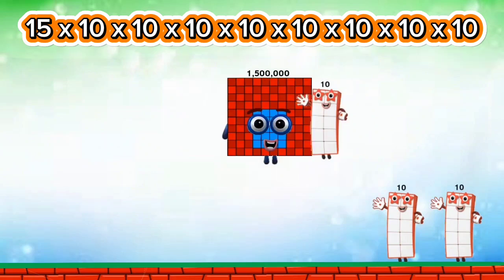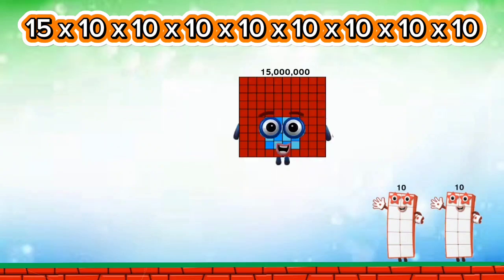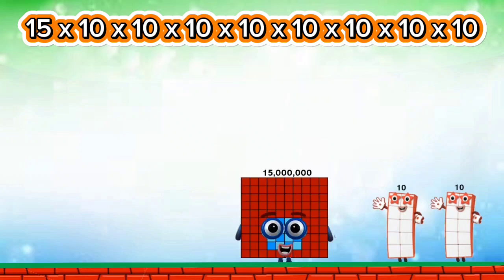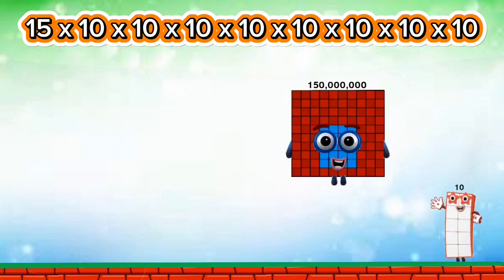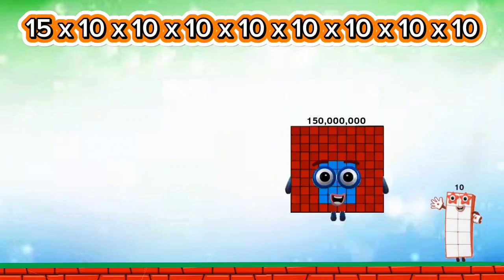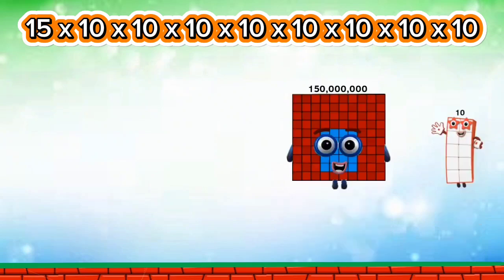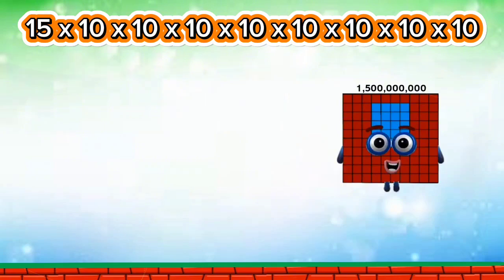1,500,000 times 10 equals 15,000,000. 15,000,000 times 10 equals 150,000,000. 150,000,000 times 10 equals 1,500,000,000.